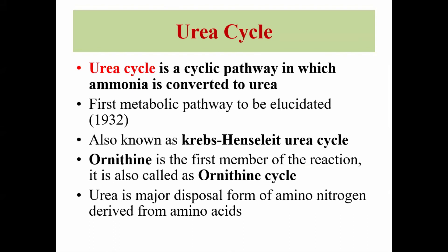Ammonia released during degradation of amino acids in different parts of the body is transported in the circulation in the form of glutamate, glutamine, alanine, and certain small amounts of free ammonia itself. The urea cycle is a cyclic pathway in which ammonia is converted to urea. It is called the urea cycle because the ornithine used in the cycle is regenerated at the end of the reactions, completing the cycle. It is the first metabolic pathway to be illustrated, in 1932, also known as the Krebs-Henseleit urea cycle. It is also called the ornithine cycle because ornithine is the first member of the reaction and is the major disposal form of amino nitrogen derived from amino acids.